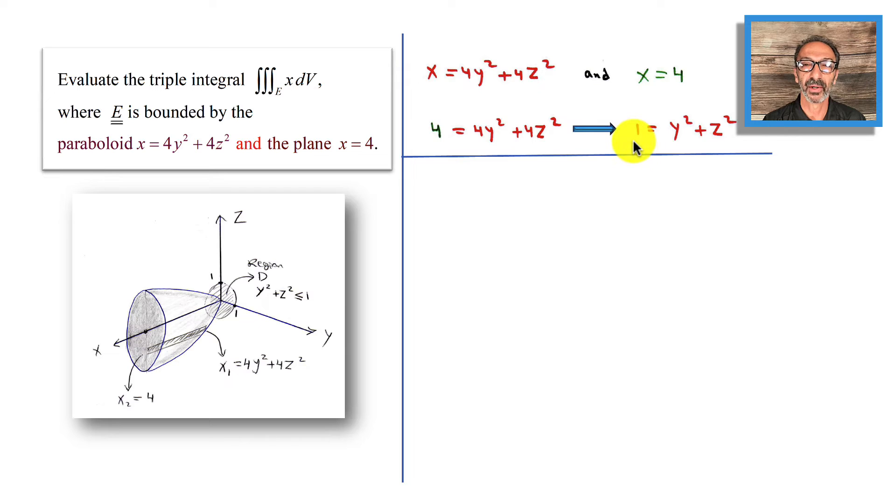Now here's the triple integration of x dV. If there's an x inside or any function except one, that's going to be for applications. If it's one instead of x, it's the volume. We start in 3D, then project down on the y-z plane where we'll work with polar coordinates. Down below is region D.